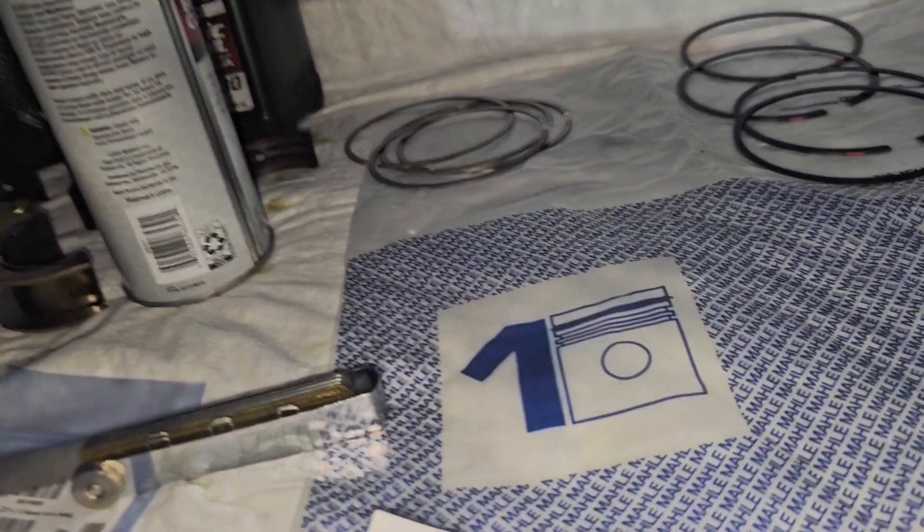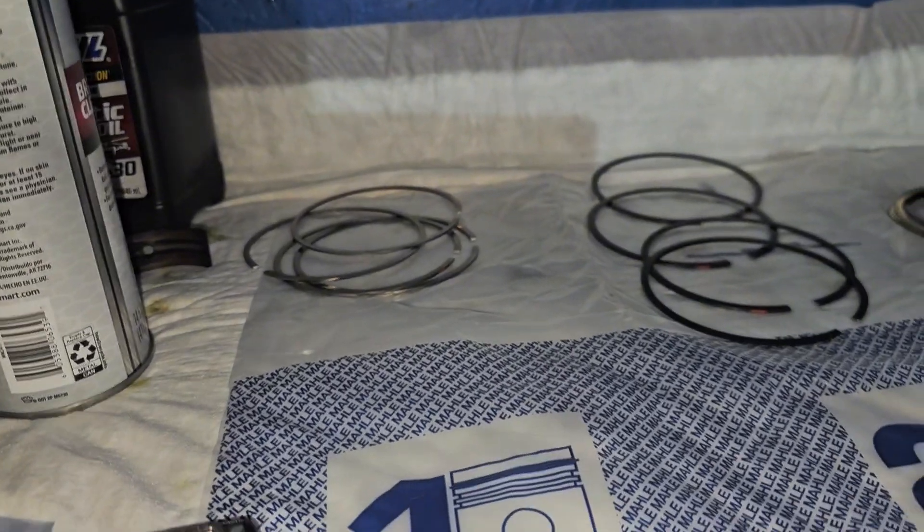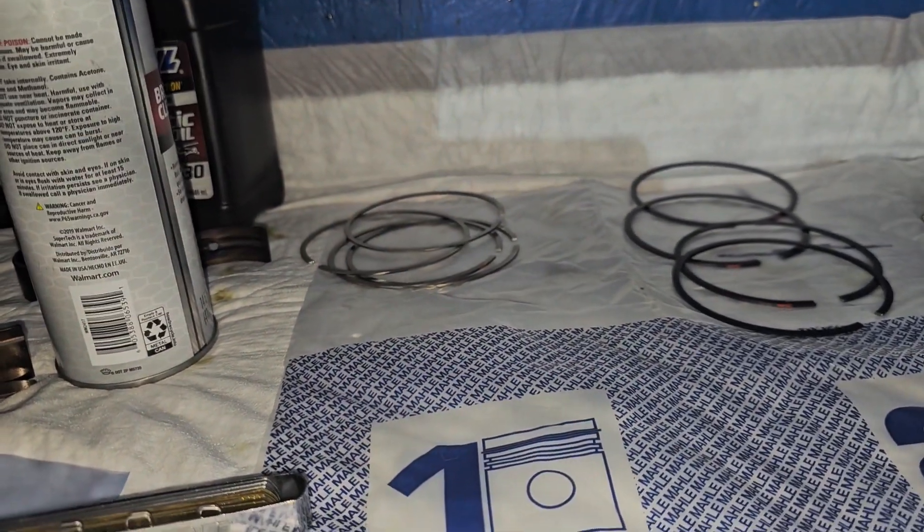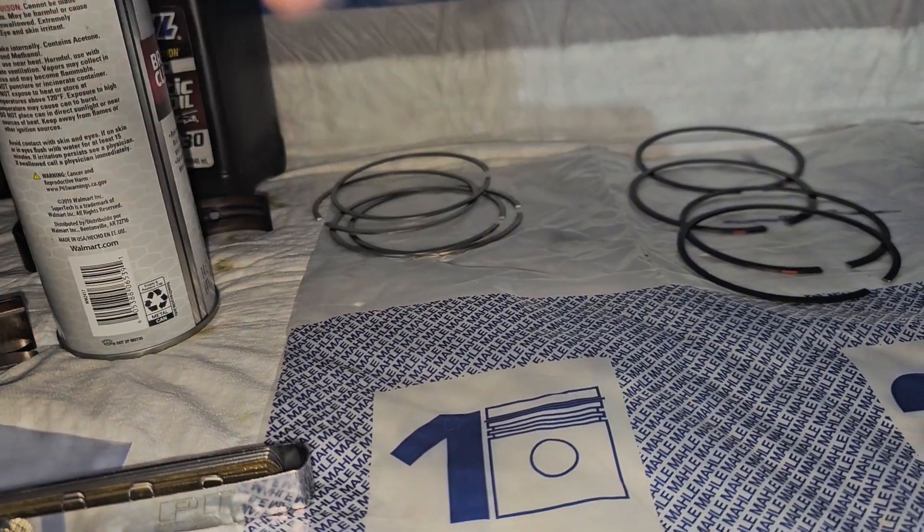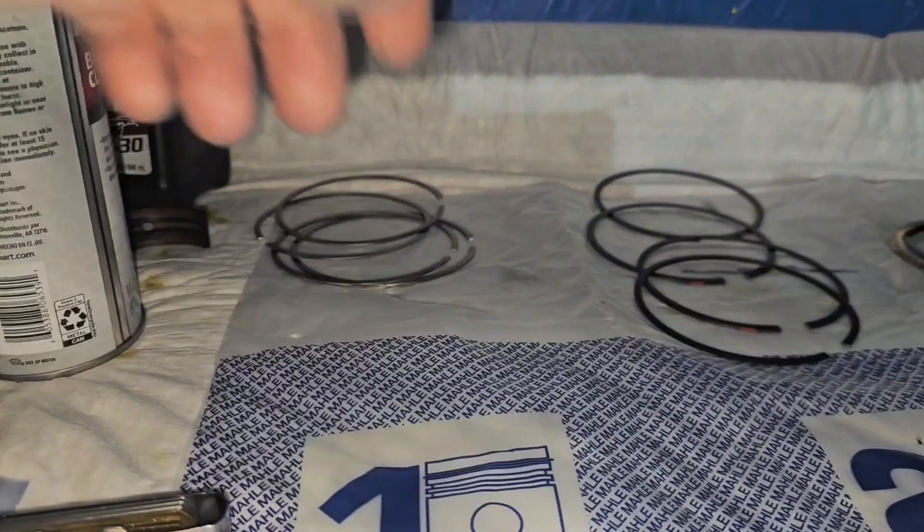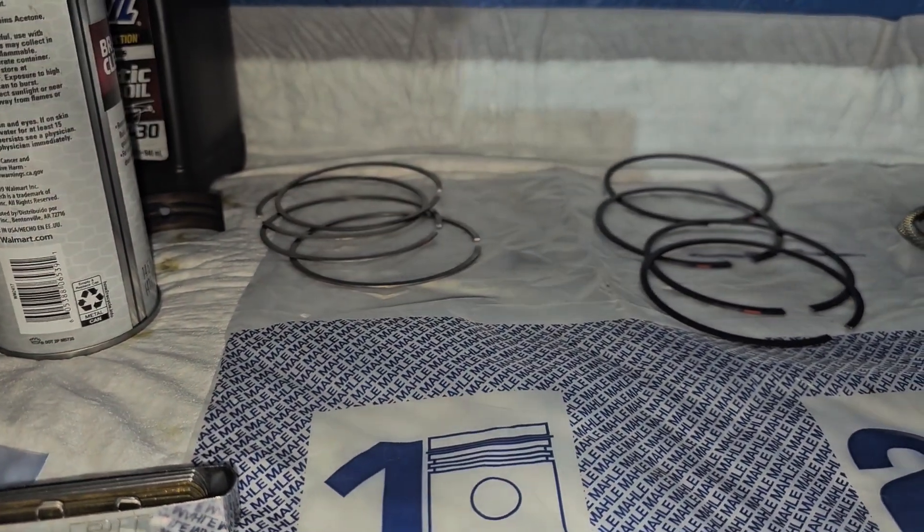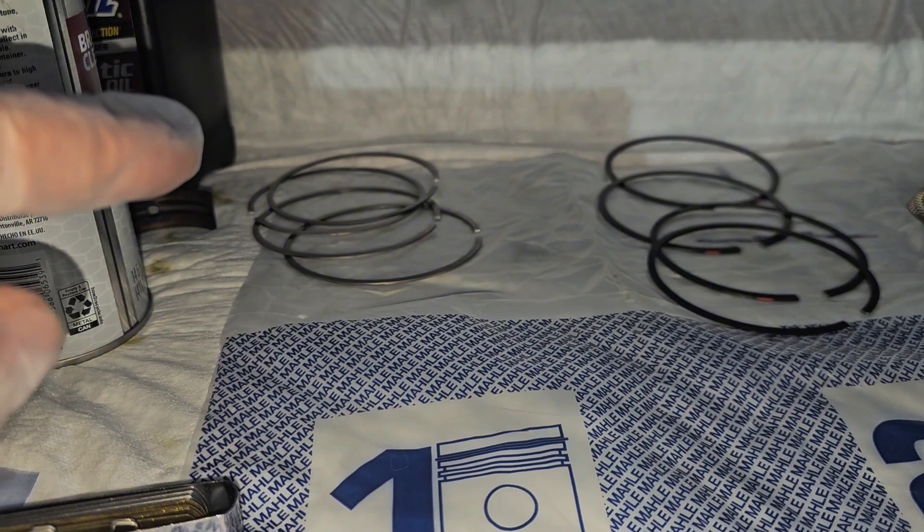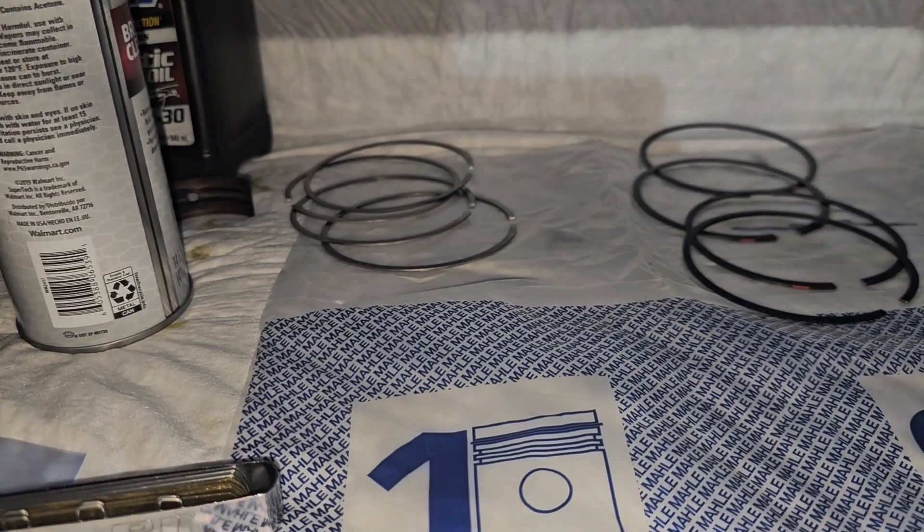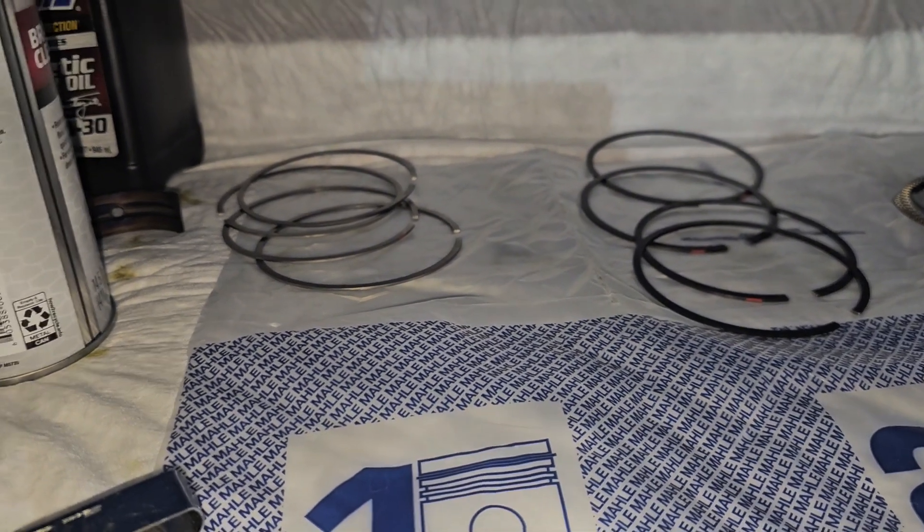Next thing we're gonna do is we're gonna take some ATF fluid or even you can do 5W30, whatever oil you want to use, but ATF is really good because of the detergents and it helps clean everything off. I'm gonna wipe down everything, lube all these up with the ATF, I'm gonna wipe down my pistons and we're gonna set the piston rings and the pistons themselves and then do the rods and connect those. I just don't know how I'm gonna video all that because I don't have a video stand for my phone so I'll have to figure that out.